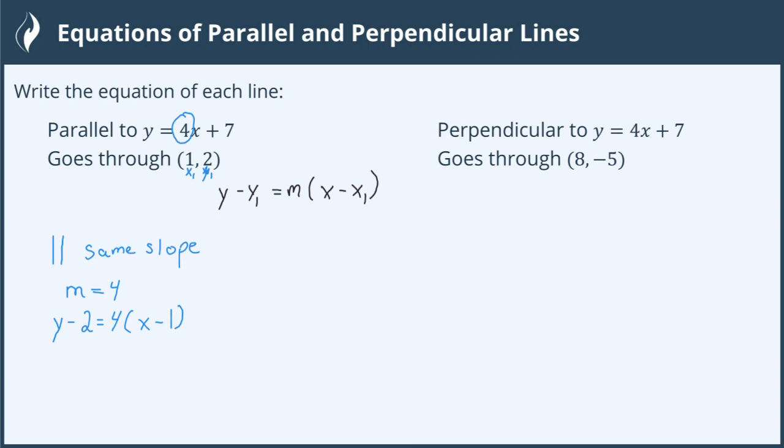Now we want to solve this so it's in the form y equals. To do this, our first step is going to be to multiply the slope value by both values inside the parentheses on the right-hand side. 4 times x is 4x and 4 times negative 1 is negative 4. We'll leave the value y minus 2 on the left side alone for now.